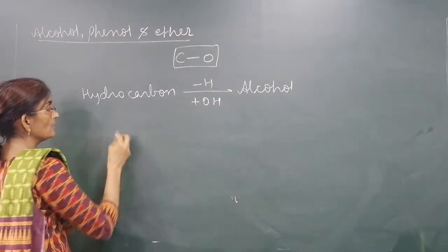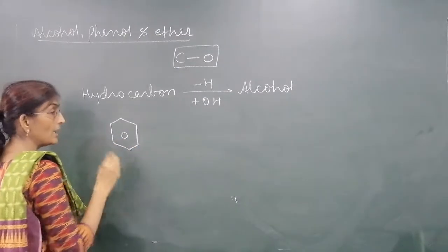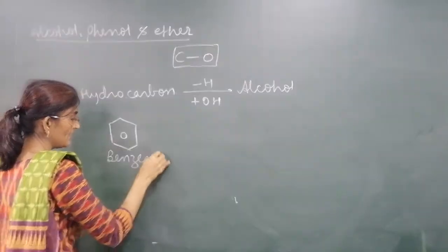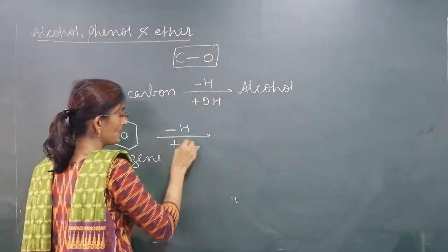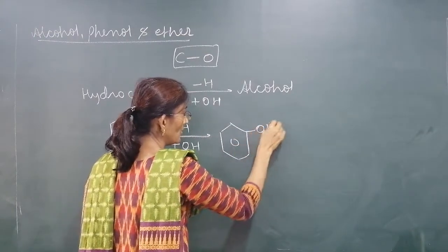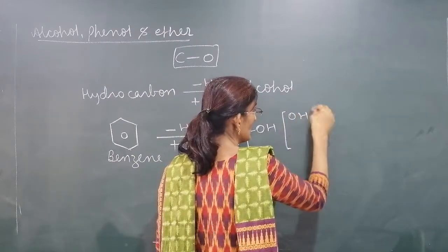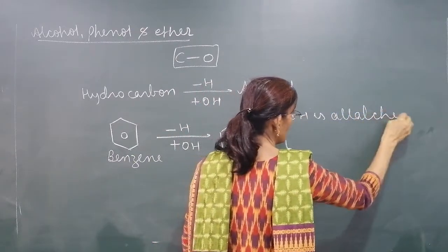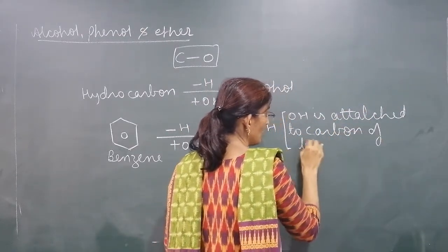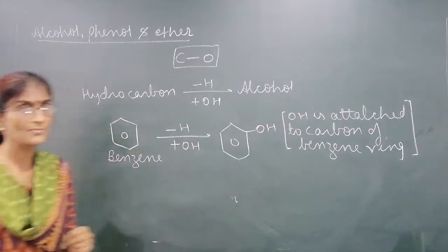How do we get Phenol? From Benzene and its derivatives — Aromatic Hydrocarbon compounds. When Hydrogen is replaced by a Hydroxyl group, we get Phenol. We can also say that Phenol is when a Hydroxyl group is attached to the Carbon of the Benzene ring. Then it is known as Phenol.